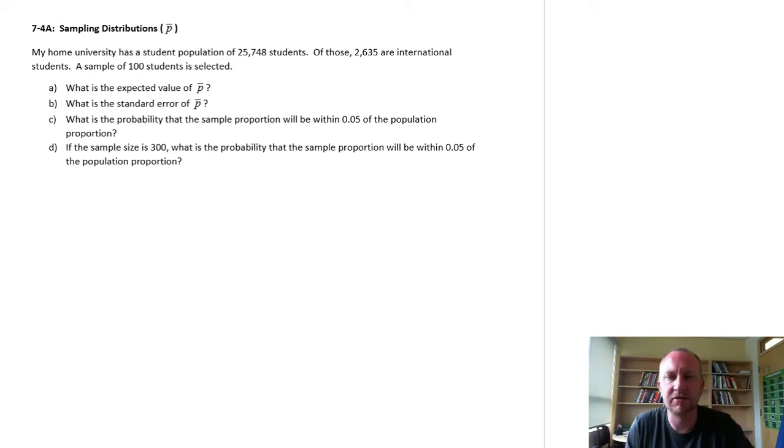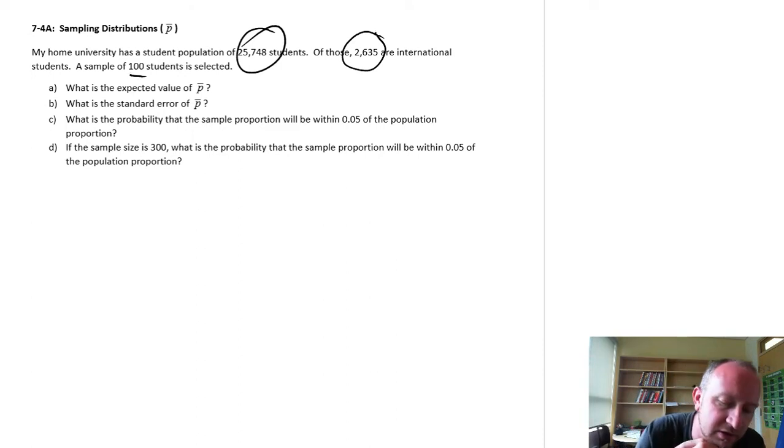So what we're looking at here, I've just pulled some information from my university's website to give us something to work with. We have a student population of 25,748 students. Of those, 2,635 are international students, and we're going to work with a sample of 100 students.